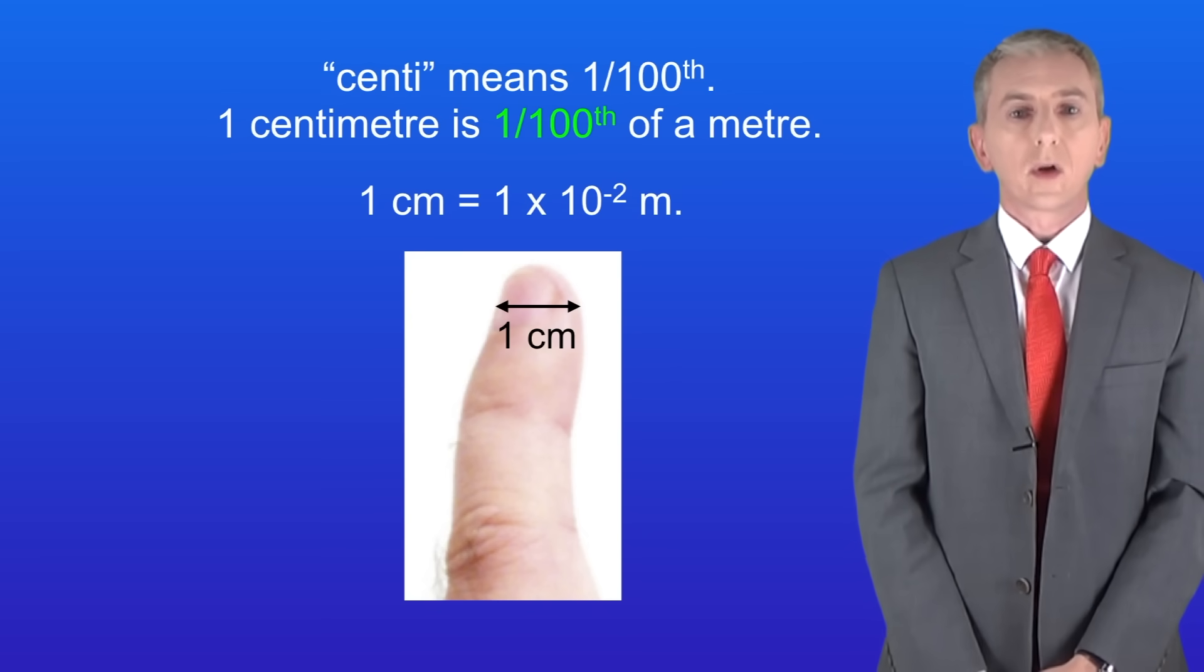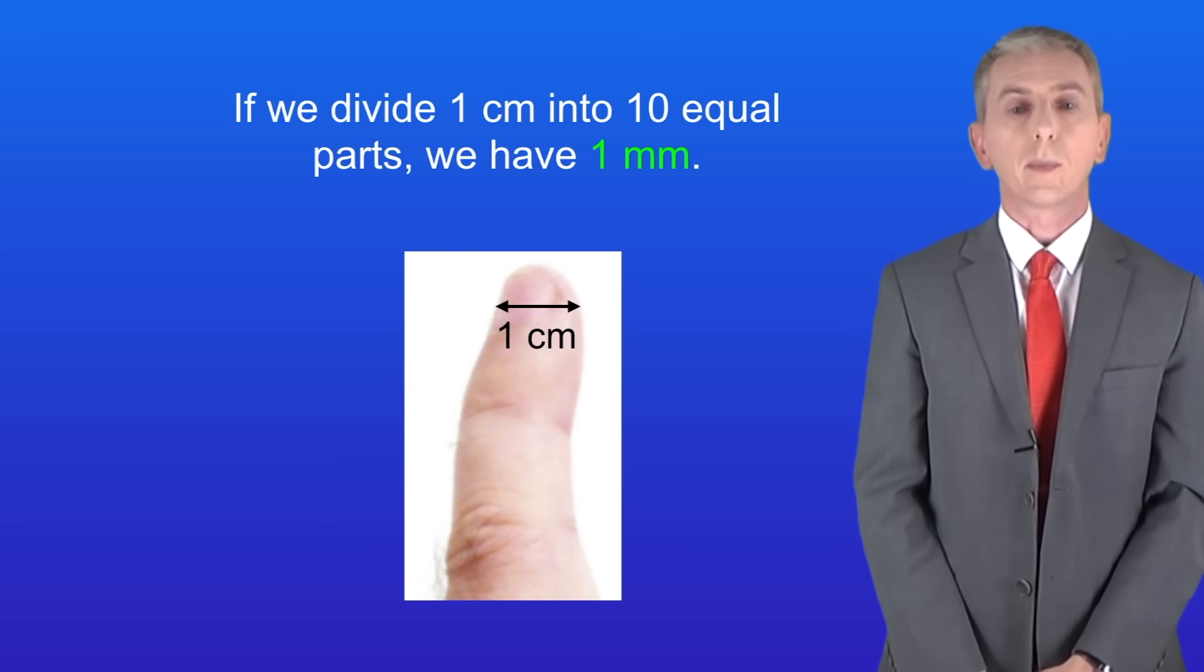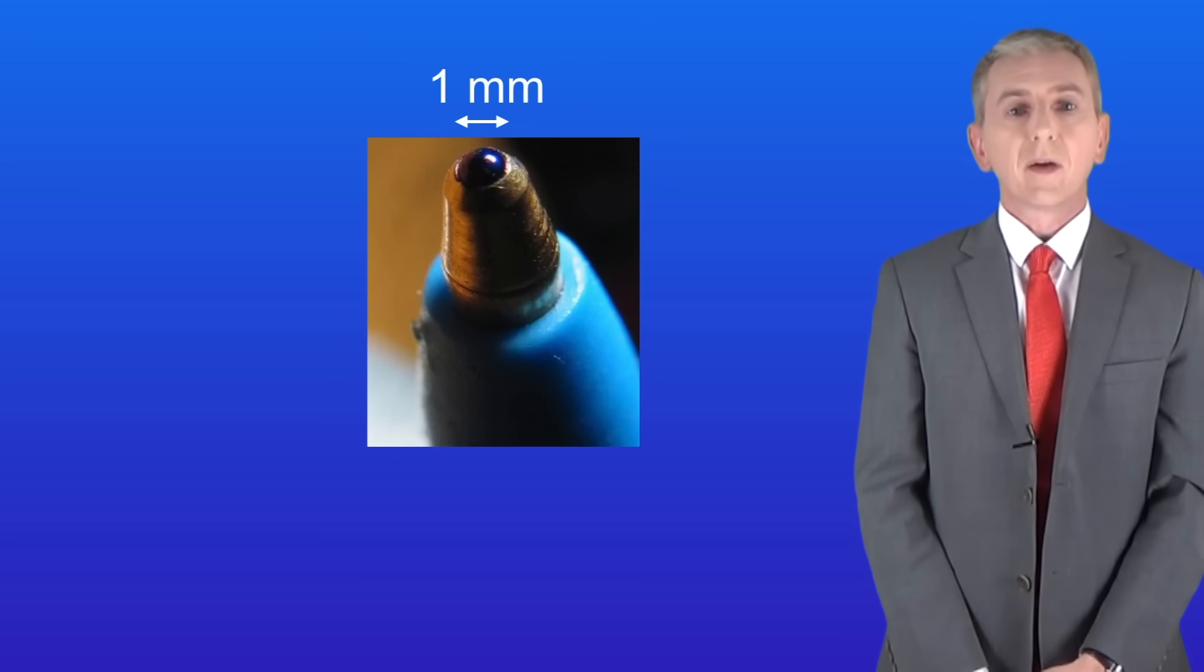In biology one centimeter is large. If we divide one centimeter into ten equal parts then we've got one millimeter. So one centimeter is ten millimeters. To give you an idea of that, the tip of a ballpoint pen is around one millimeter.